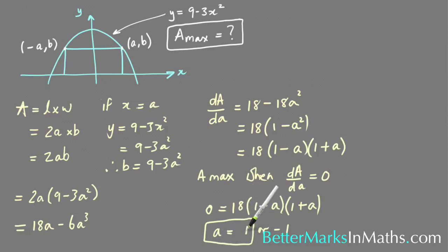That means the maximum area happens when a equals 1. To find the corresponding area, you're just going to substitute a equals 1 into the area expression: 18a minus 6a cubed. Subbing in a equals 1: 18 minus 6 times 1 cubed is 6, and 18 minus 6 is 12. So 12 square units is the value of the maximum area.